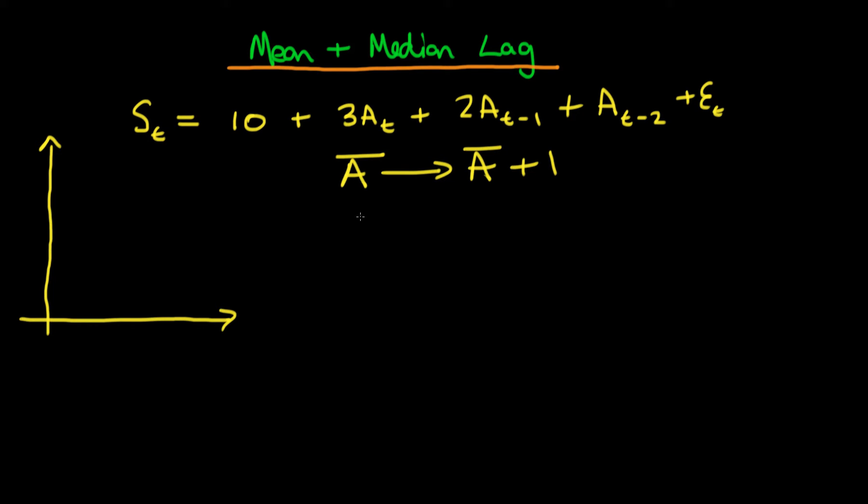So the long run impact on sales, the change in sales from this sort of change, would be equal to 3 plus 2 plus 1. In other words, there would be a 6 unit change in sales overall if the level of advertising went up permanently by one unit.